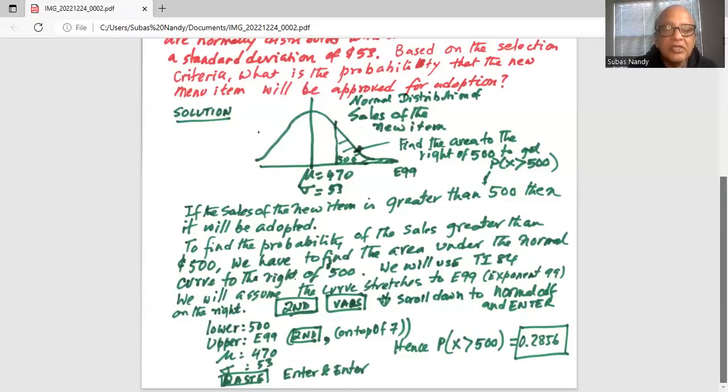That will give E, and then we will type 99, which is a very large number. Mu, mean is 470. Standard deviation is 53. And then we bring the cursor down on paste and hit enter and enter. And we get the result. So the probability of X greater than 500 is 0.2856.